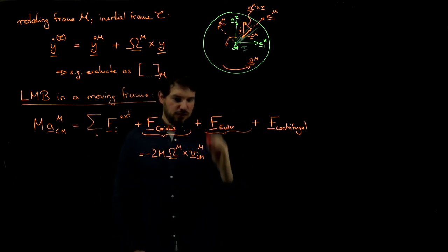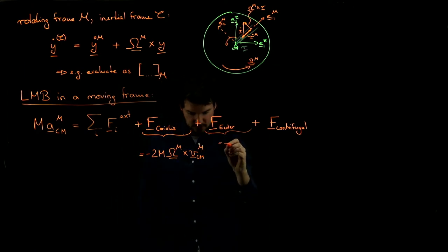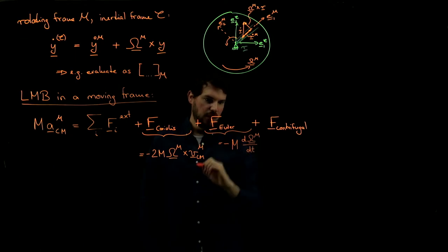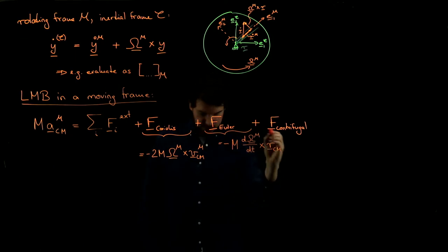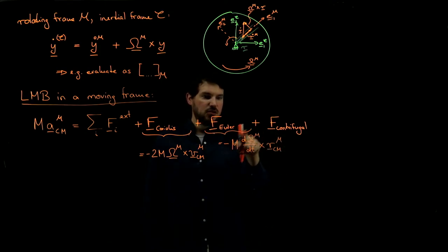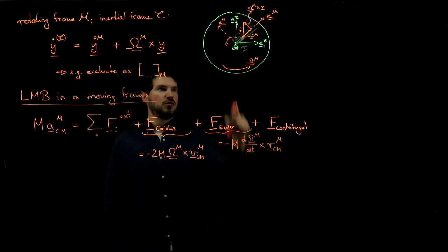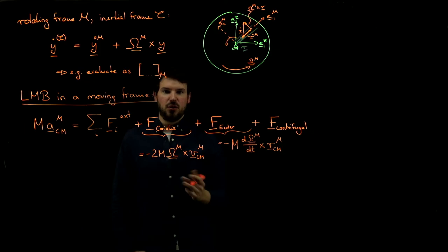Similarly, the Euler force is minus m times the angular acceleration of the frame — the time derivative of its angular velocity — cross the position of the particle in the moving frame. This term only appears if we have an angular acceleration. If you're rotating with a constant angular velocity, this is zero — no Euler force.